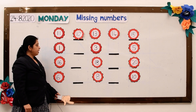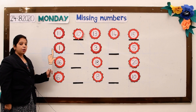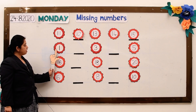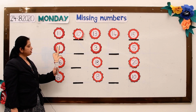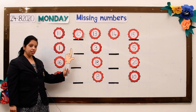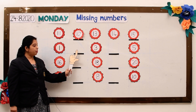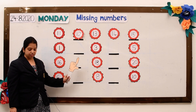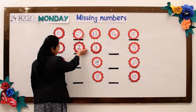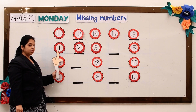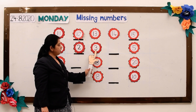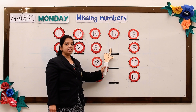Now, in the second row, there are some numbers missing. So let us find out which numbers are missing. Number 1, number 3. So can you tell me which number is missing? Yes, you are right, number 2 is missing. 1, 2, 3. Yes, here number 4 is missing.